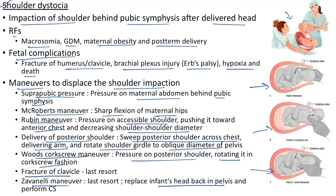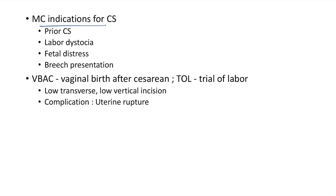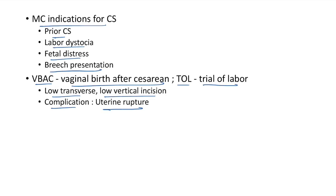Most common indications for cesarean section: prior cesarean section, labor dystocia, fetal distress, and breech presentation. VBAC (vaginal birth after cesarean section), also known as TOLAC (trial of labor after cesarean section), can be done when the previous C-section was a low transverse or low vertical incision. A complication of VBAC is uterine rupture.